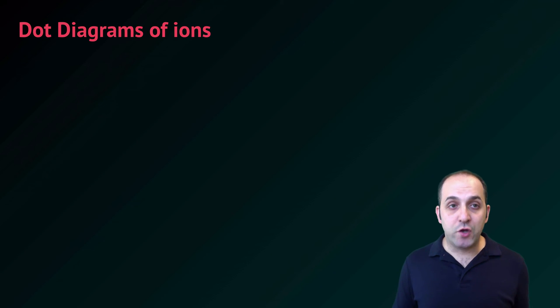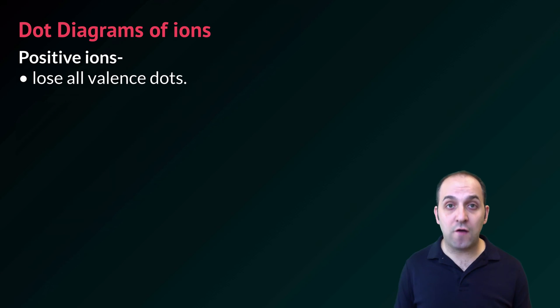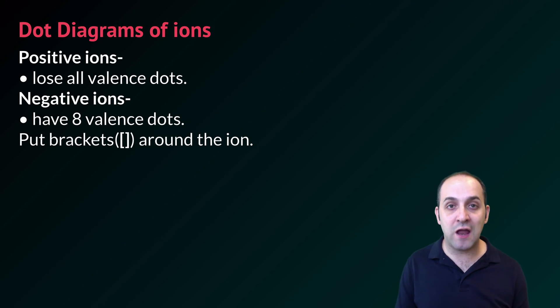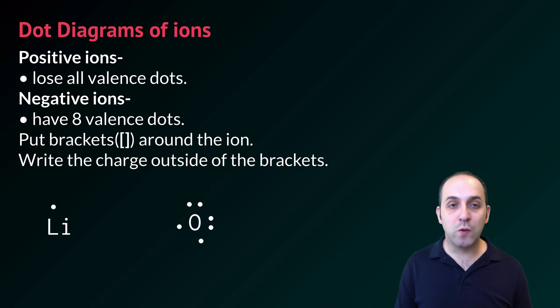We are going to need to be able to draw dot diagrams of ions. It's really not that hard. Positive ions are going to lose all of their valence dots, and negative ions are going to have the full complement of eight valence dots. We're then going to put square brackets around the ion, and we're going to write the charge outside of the brackets. Here are two examples. Let's do lithium and oxygen. Lithium is going to lose its valence electrons, and so we're going to give it no dots. We're going to put brackets around it and write the plus one charge outside of it. Oxygen is going to gain two valence electrons to have the full eight. We're going to put square brackets around it and write the minus two charge outside of it.